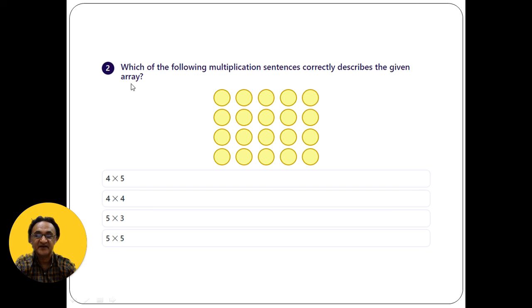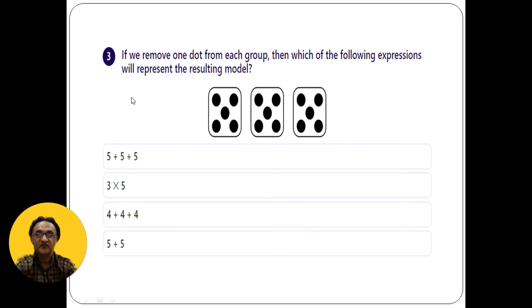If you remove one dot from each group, then which of the following expressions will represent the resulting model? That's another method you can try.